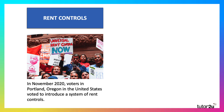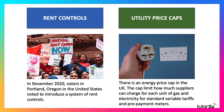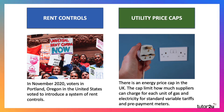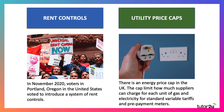There are loads of good examples. Many people think about rent controls — back in the autumn of 2020, voters in Portland, Oregon in the USA voted to introduce a system of rent controls. We also have, of course, energy price caps in the UK from Ofgem, which sets a limit on how much suppliers can charge for each unit of gas and electricity in the UK.